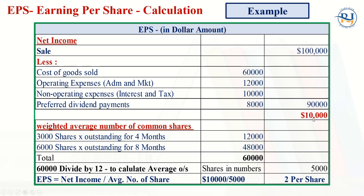The weighted average number of common shares is calculated as follows: the company issues 3,000 shares at the beginning of the period, then issues 6,000 shares after four months, which are held for eight months. So: (3,000 × 4) + (6,000 × 8) = 60,000 divided by 12 = 5,000 shares. Therefore, EPS = $10,000 / 5,000 shares = $2 per share.